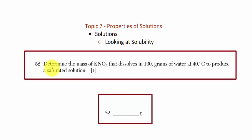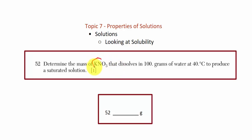Question 52: Determine the mass of potassium nitrate that dissolves in 100 grams of water at 40 degrees Celsius to produce a saturated solution. Here we'll be referring to table G, which contains the solubility curves. We'll look up the potassium nitrate curve, track it at 40 degrees Celsius, and find exactly what a saturated solution can hold in 100 grams of water.